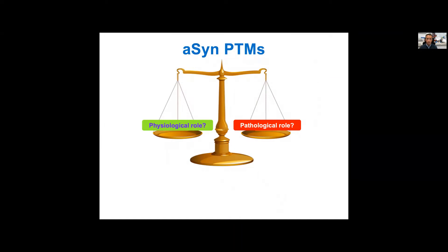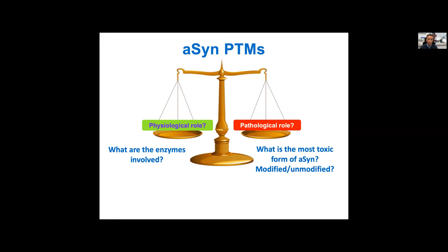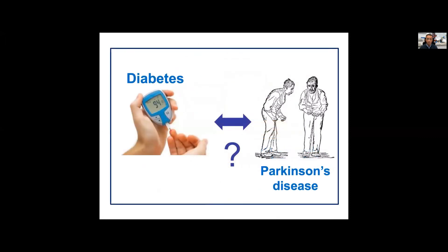With this in mind, we started several years ago investigating different post-translational modifications of alpha-synuclein, asking whether these had physiological or pathological roles. We were interested in studying the enzymes involved, what were the toxic forms — the modified or non-modified forms — and whether these modifications took place before or after the accumulation of inclusions. One of these modifications we think is particularly interesting because it may provide insight into the connection between diabetes and Parkinson's disease.